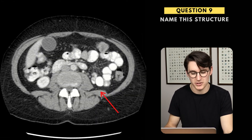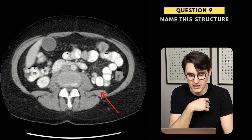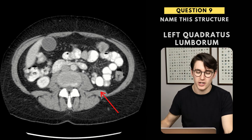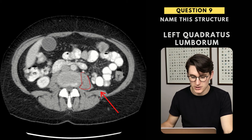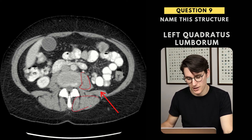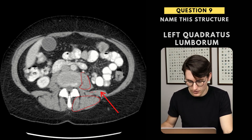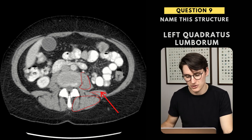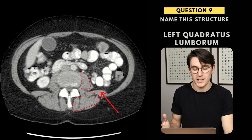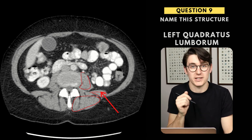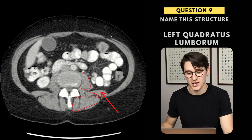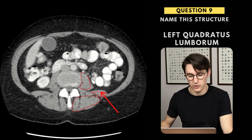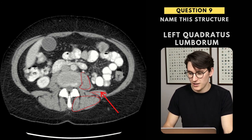Here we have another axial CT of the abdomen. We're asked to label the structure here — this is a muscle, the left quadratus lumborum. Anterior to that we have the left psoas. Posterior and outside of the abdomen are the erector spinae muscle groups. The quadratus lumborum sits against the posterior abdominal wall and is retroperitoneal. These are the three main muscle groups asked about in the abdominal cavity in exams. Other muscles that could be included are your internal and external obliques, transversus abdominis, and rectus abdominis, but these posterior muscles — psoas, quadratus lumborum, and erector spinae — are common exam questions.